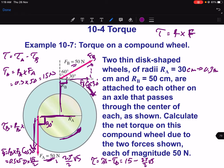We will get the answer is around minus 6.7 Newton meter or joule. So that will be the net torque on this compound wheel due to the two forces F_A and F_B.